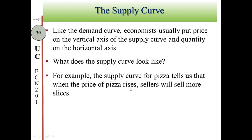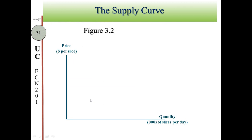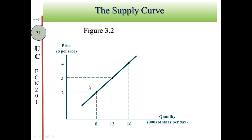When you combine the property of the supply curve with the condition — that other determinants on slide 53 remain constant — you get the law of supply. The law of supply states that price and quantity supplied are directly or positively related. When the price rises, suppliers increase their supply. The supply curve of pizza, for example, tells us that when the price of pizza rises, sellers will sell more slices.